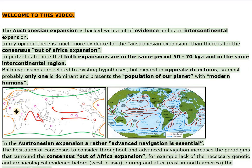Both expansions are related to existing hypotheses but expand in opposite directions, so most probably only one is dominant and represents the population of our planet with modern humans. In the Austronesian expansion, a rather advanced navigation is essential. The hesitation of the consensus to consider advanced navigation increases the paradigms that surround the Consensus Out of Africa expansion — for example, the lack of necessary genetic and archaeological evidence.